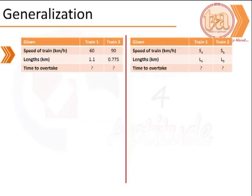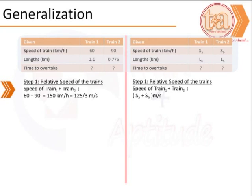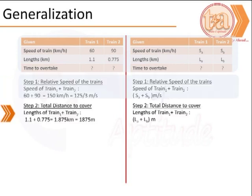To begin generalizing, we begin by looking at what data we have and putting it into the table that we have created above. The next step is to find the relative speeds of the trains and keep it in meters per second. Next, we calculate the total distance covered by the trains that is the length of the two trains.